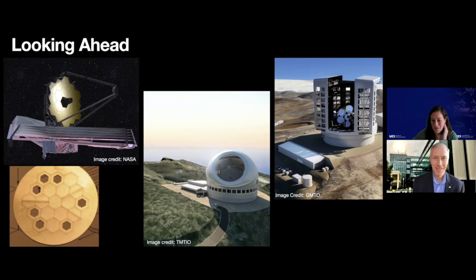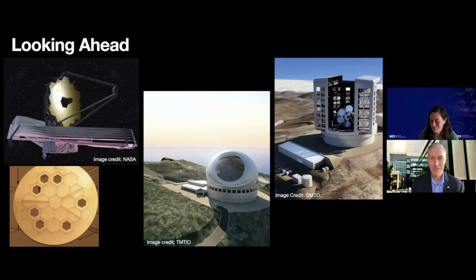As for telescope locations, the Giant Magellan Telescope is going to be in Chile. TMT is still up in the air — options are Hawaii and the Canary Islands. Combining them, you gain in sky coverage so you can observe a larger portion of nearby stars, slippery exoplanets, and young stars in different regions of the sky.